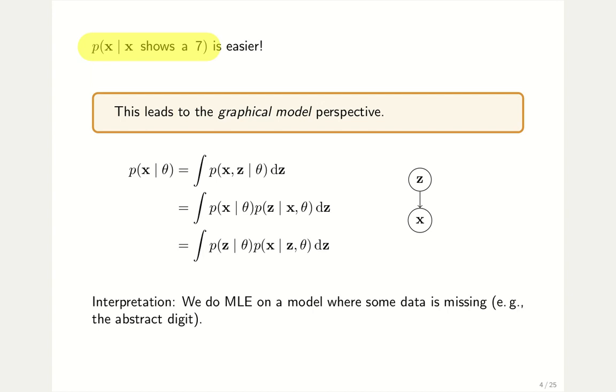This directly leads to the so-called graphical model perspective. That sounds more complicated than it is because we have already depicted a graphical model here on the right-hand side. A graphical model is just a graph that shows you the relationship between certain random variables or random vectors. This is the most simple graphical model you can come up with. It consists of two random vectors and one arc, one directed arc between the two. The direction of the arc tells you which random variable is influenced by which other.